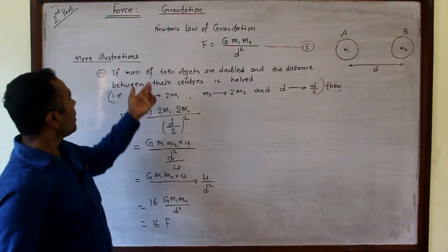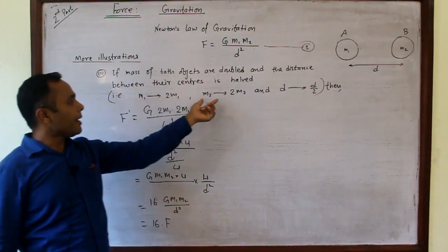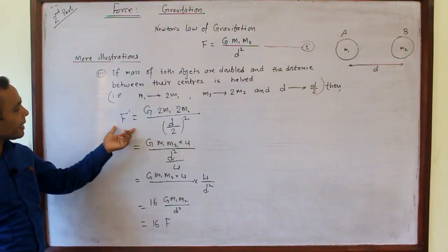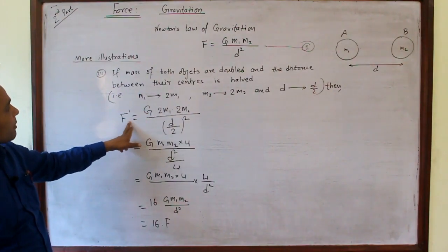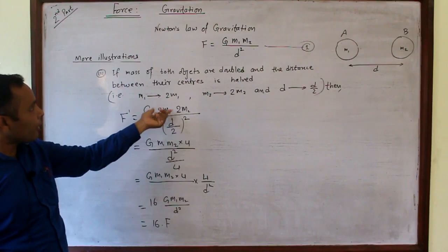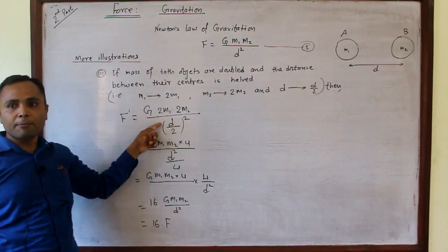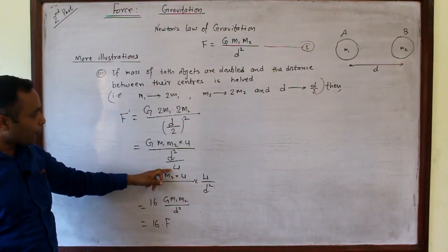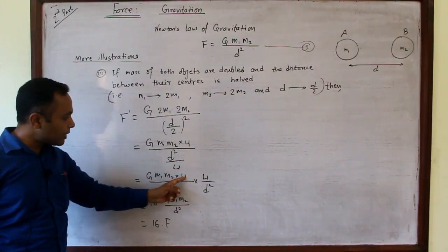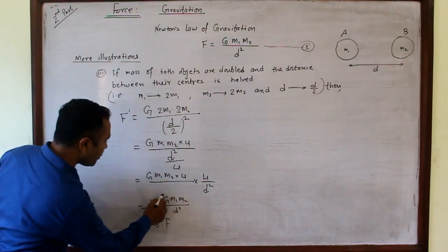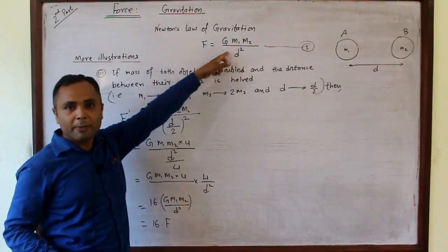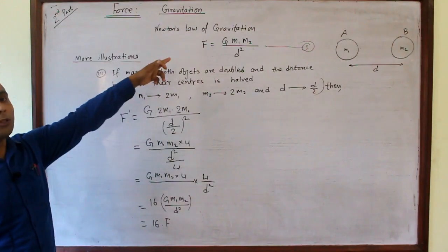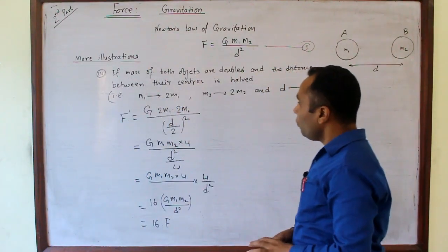When the mass of both objects are doubled — M1 becomes 2M1 and M2 becomes 2M2 — and the distance between their centers is halved to D/2, then F dash = G(2M1)(2M2)/(D/2)². Since (D/2)² = D²/4, the 4 multiplies above giving 16GM1M2/D², which is 16F. Therefore, the force of gravitation becomes 16 times the original force.